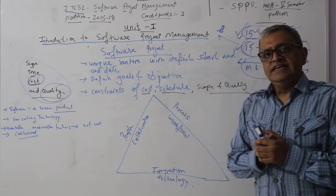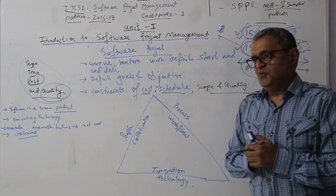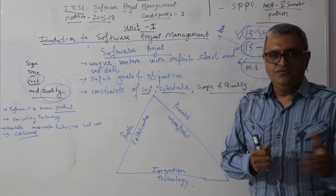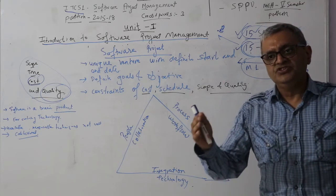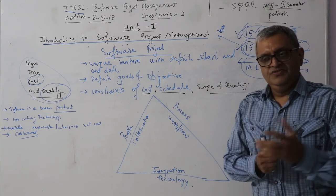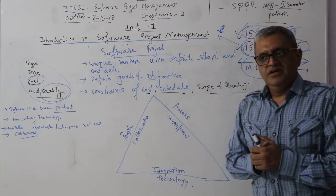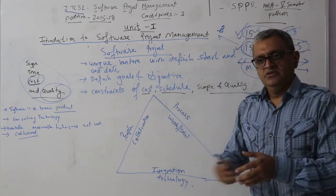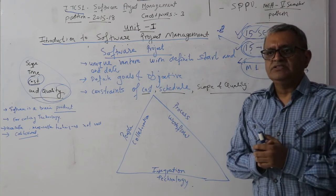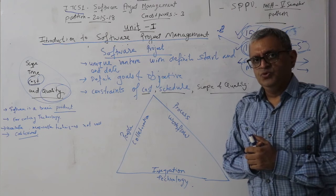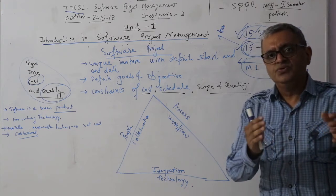The software industry is probably about five decades old — around 45 to 50 years — and within this period technology has changed so rapidly. If somebody built a house 15 years ago and wants to build another house today, there won't be much difference in the activities carried out then versus now.